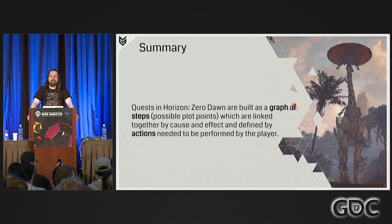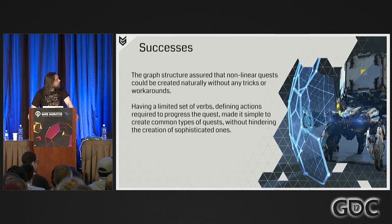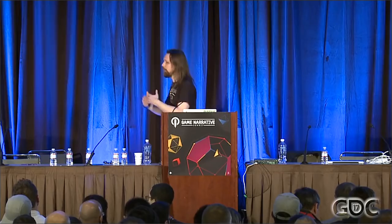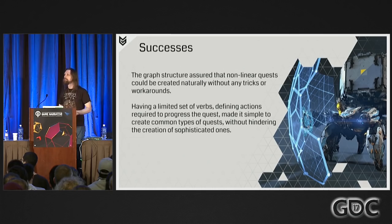To summarize: quests in Horizon Zero Dawn are built as a graph of steps — possible plot points — linked together by cause and effect and defined by actions needed to be performed by the player. While using our methods, we managed to succeed in some areas and not so much in others. Let's talk about the good stuff first. The graph structure did indeed ensure that we could create naturally and without any hacks or workarounds nonlinear quests, meaning everyone involved in building quests was thinking nonlinearly — it was our main mode of operation.